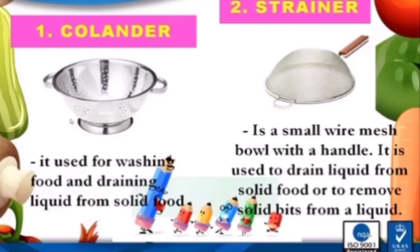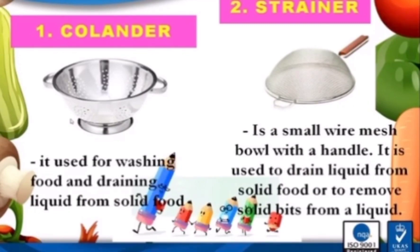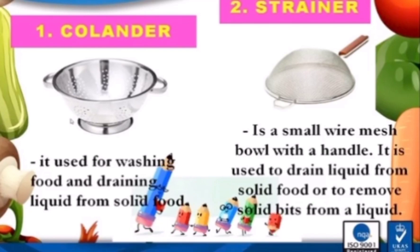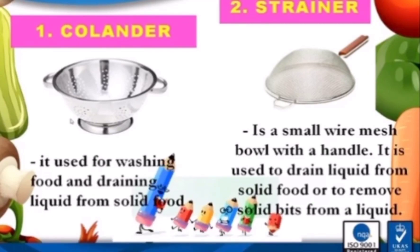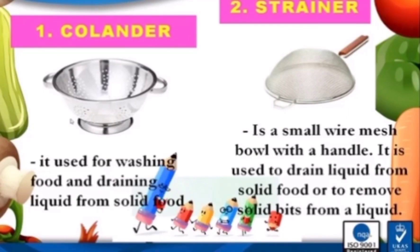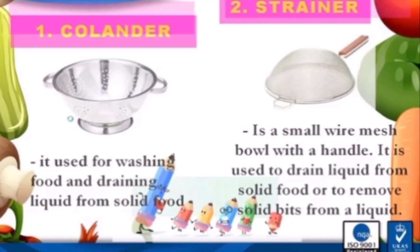Number two is a strainer. It is a small wire mesh bowl with a handle, used to drain liquid from solid food or to remove solid bits from a liquid. It is a kitchen device used to strain liquid away from other ingredients in the preparation of liquid or solid foods.